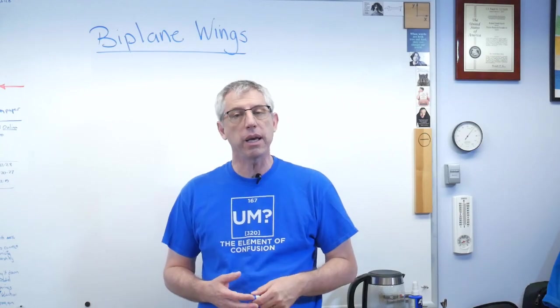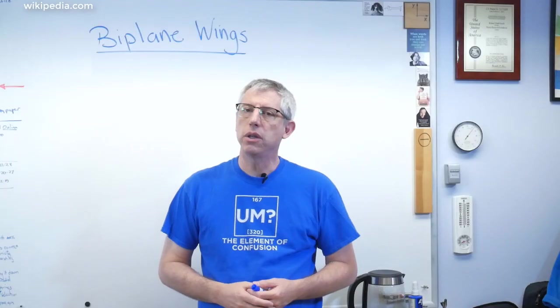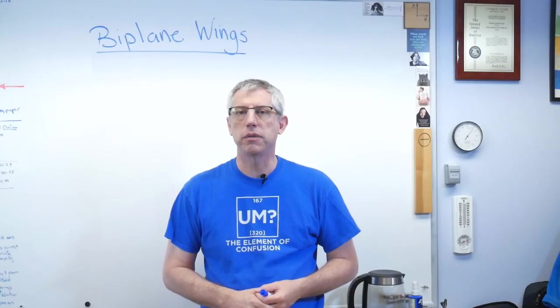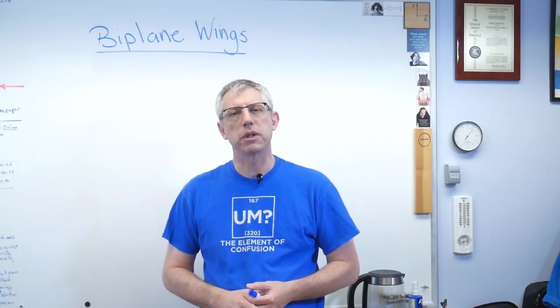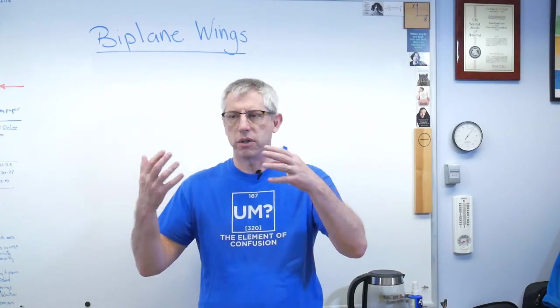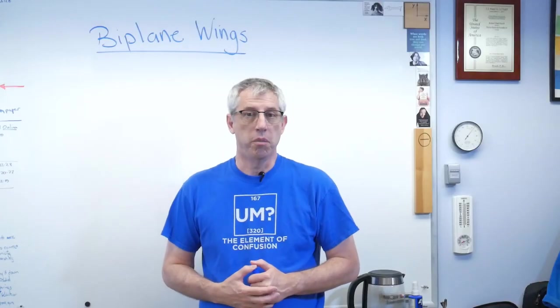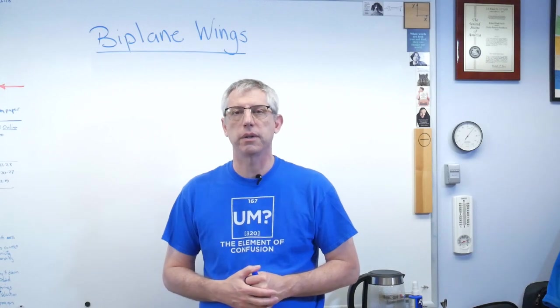Biplanes are any kind of plane that have two sets of wings, usually one on top of the other. These days, you don't see biplanes very often — usually at air shows. Sometimes aerobatic pilots who fly in stunt displays are flying biplanes. But in the early days of aviation, biplanes were where it was at. Most planes were biplanes.